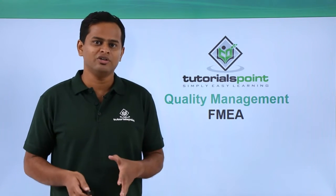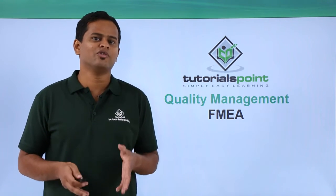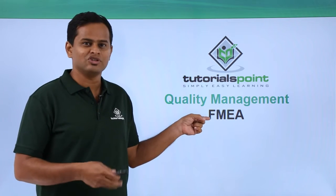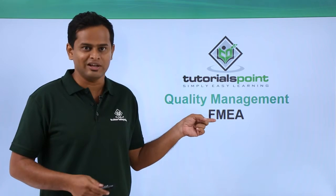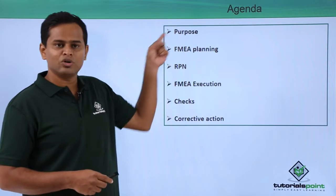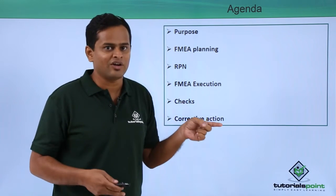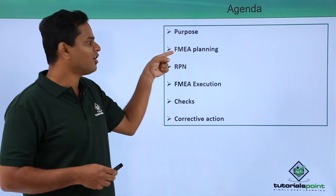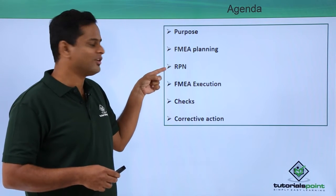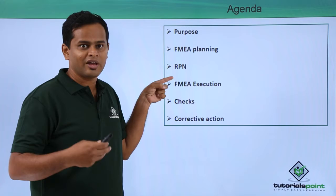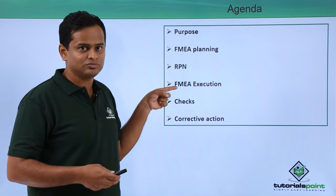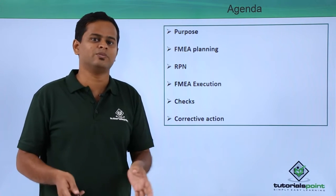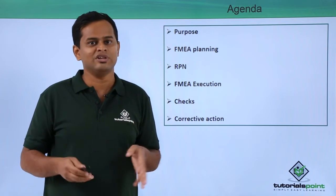Hi friends, welcome to Tutorials Point. In this video we will be understanding quality management, and in that FMEA — that means Failure Modes and Effects Analysis. These are the various subheadings we are going to cover: the purpose or need of FMEA, FMEA planning, risk priority number, execution, and finally the checks and corrective actions under our current FMEA system.